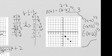So it's going to look something like this — and there is our function. So it's been translated to the right 2 and down 3, and then it has been reflected horizontally.